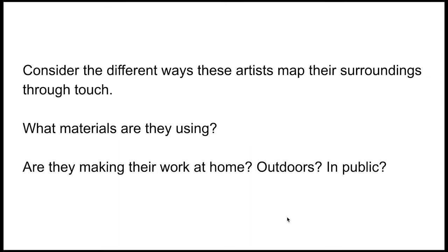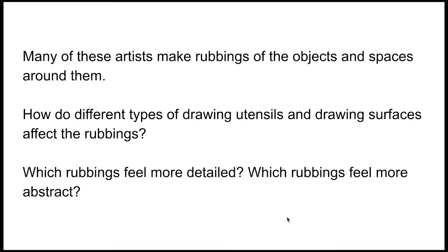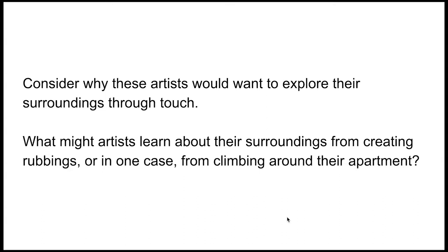Consider the different ways these artists map their surroundings through touch. What materials are they using? Are they making their work at home, outdoors, in public? Many of these artists make rubbings of the objects and spaces around them. How do different types of drawing utensils and drawing surfaces affect the rubbings? Which rubbings feel more detailed? Which rubbings feel more abstract? Consider why these artists would want to explore their surroundings through touch, and what they might learn about their surroundings from creating rubbings, or in one case, from climbing around their apartment.